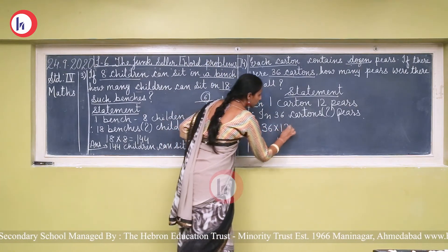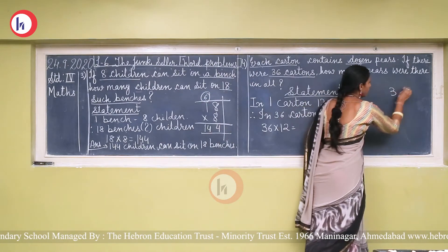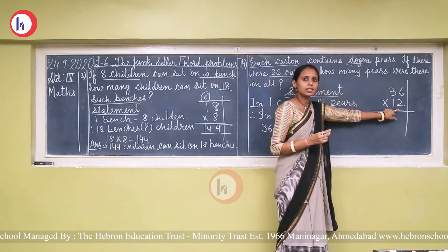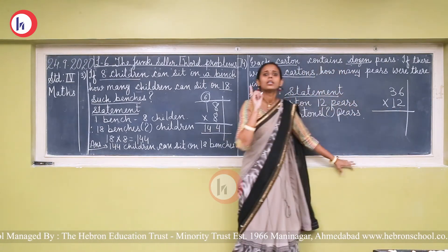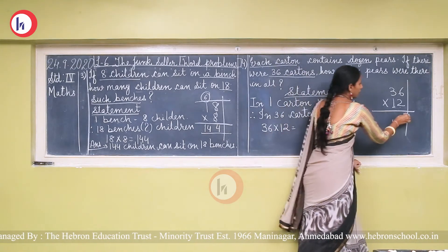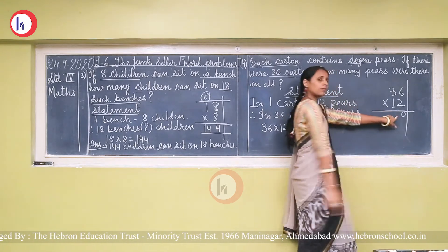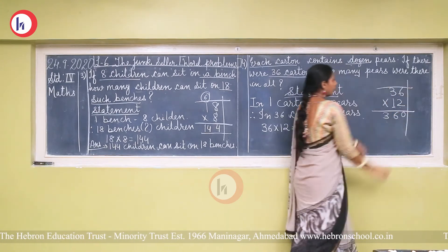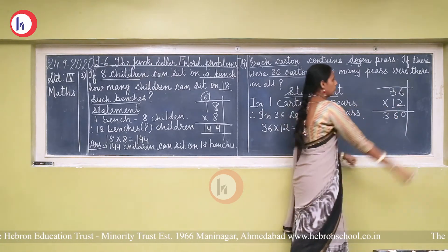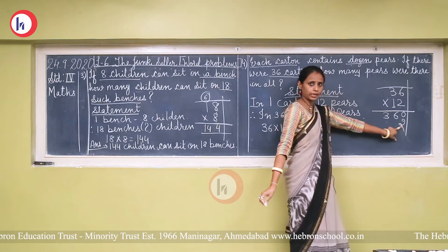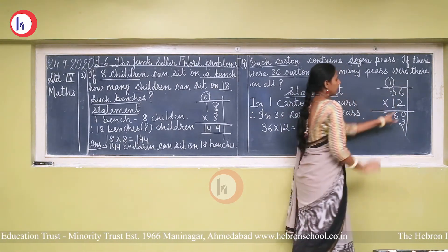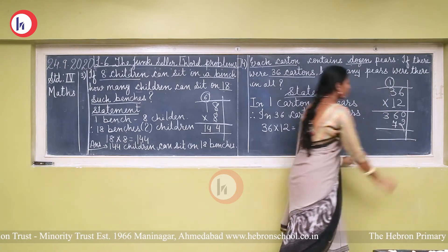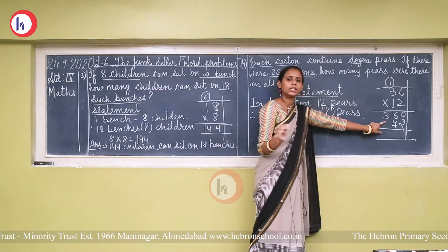We multiply 36 by 12. There are two digits in 12, so we start from the tens place first, writing a zero placeholder. 1 × 6 = 6 and 1 × 3 = 3, giving 360. Then for the units digit: 2 × 6 = 12, write 2 carry 1; 2 × 3 = 6 plus 1 = 7, giving 72.